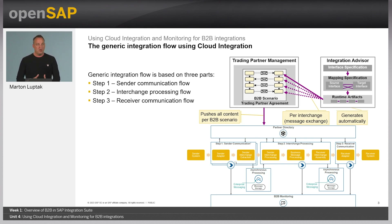Step one also receives the data from the sender, extracts the sender interchange header data — we will see the details of what header data are used for certain processing in the runtime — and hands over all this information to step two.